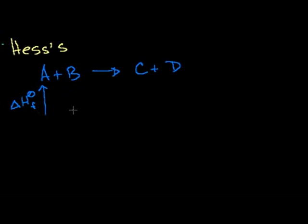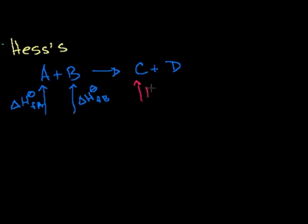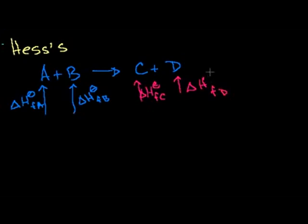So we have the standard heat of formation of A, the heat of formation of B — these are all standard heats of formation. And we can look up in a table the heat of formation of C and the heat of formation of D. All of these things we can look up in a table.